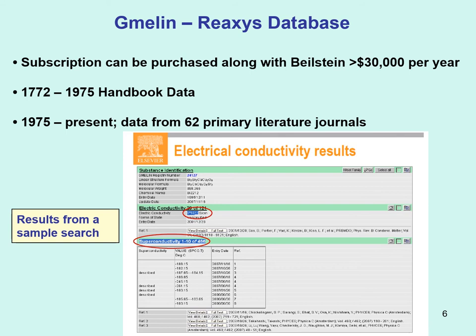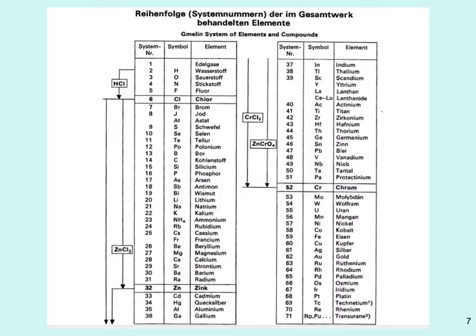This is what a sample record from the Reaxys database looks like. As mentioned, it also includes Beilstein. Because of its cost and the defunding of CUNY, we do not have it. It contains all the data from the printed handbook plus data from 1975 to the present from 62 important primary literature journals, keeping Gmelin up to date.